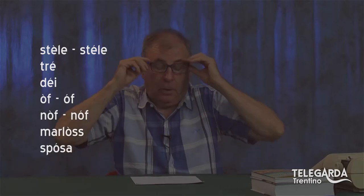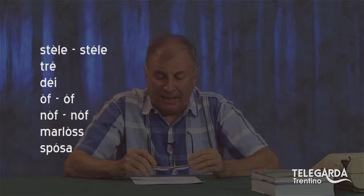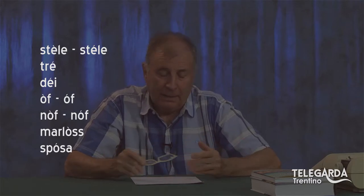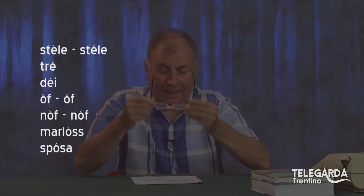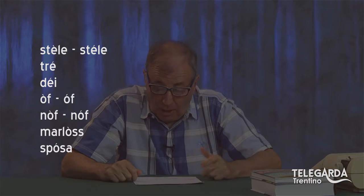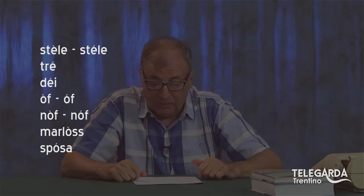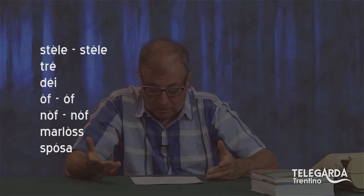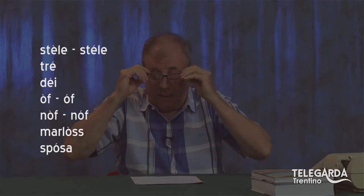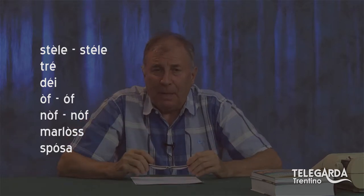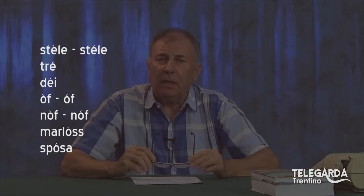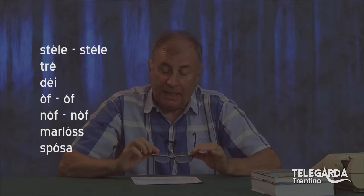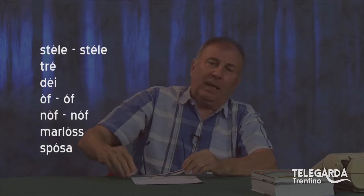Qui subentra il dialetto locale: of con O aperta, e of chiuso — l'uovo. Nof: stessa cosa, nof aperto e nóf chiuso. Invece il màrlos è uguale per tutti: una bella O aperta, il lucchetto. La mia sposa in dialetto diventa la me spósa, quindi la O diventa chiusa. In italiano aperto, in dialetto diventa O chiuso. Questo era l'accento fonico.